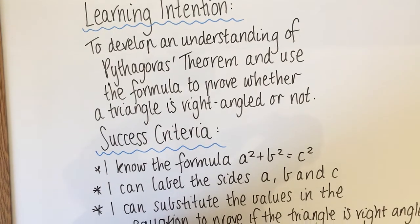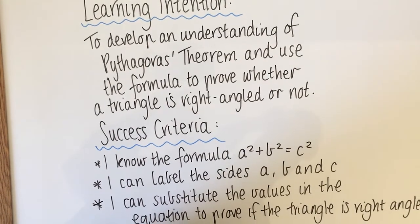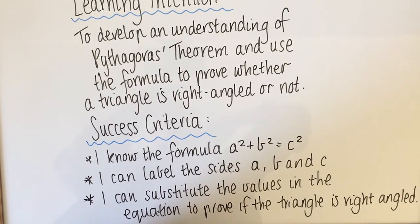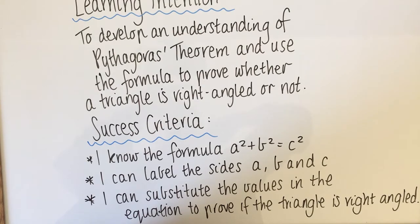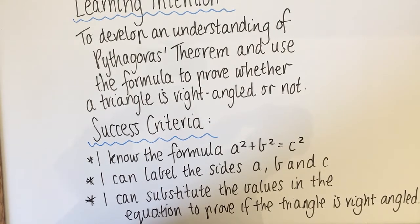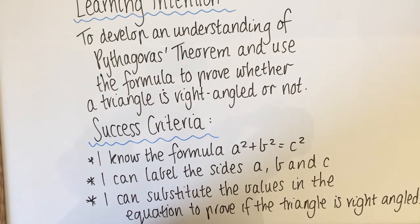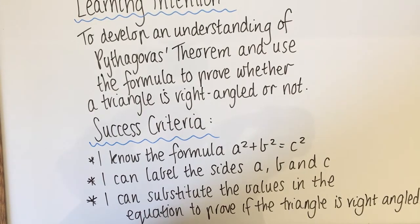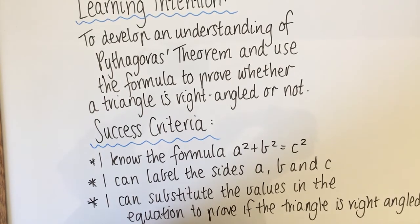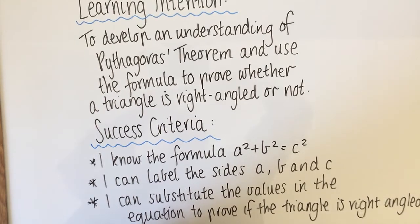The success criteria is that I know the formula a squared plus b squared equals c squared, I can label the sides of a triangle a, b and c, and I can substitute the values into the equation to prove if the triangle is right-angled or not right-angled.